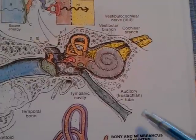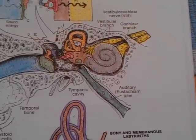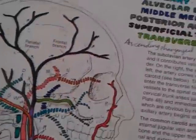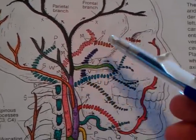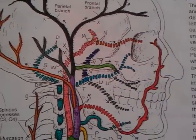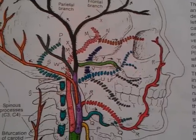The blood supply is by branches from the ascending pharyngeal artery and middle meningeal artery. The nerve supply is from the tympanic plexus.